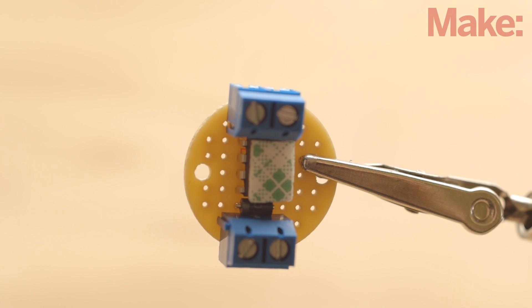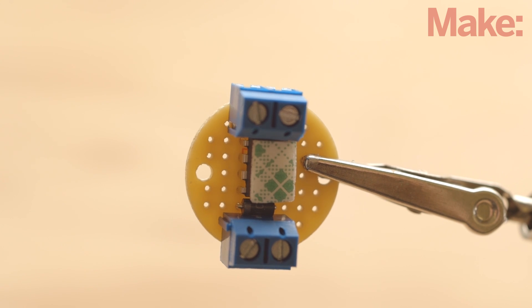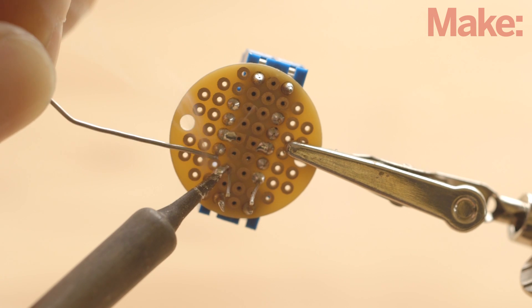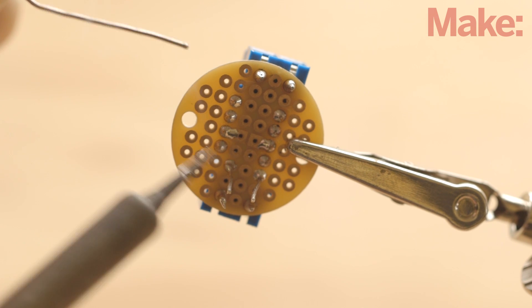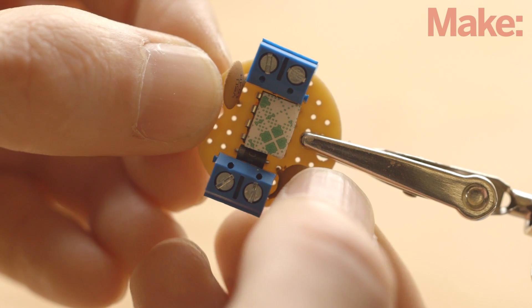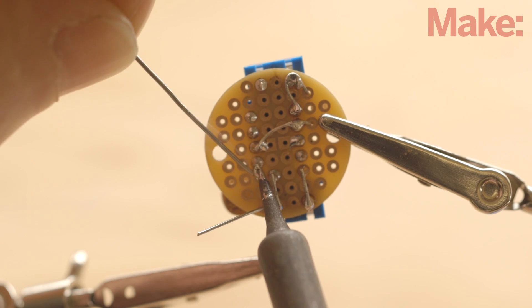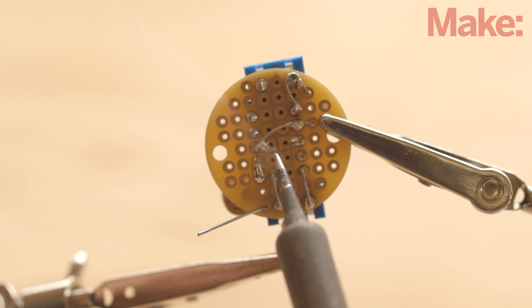Next, we'll add a diode right below the 555 timer, making sure that the silver stripe on the diode body is closest to pin 4. This helps control the counter-electromotive force that occurs when motors are switched off. The next two components are ceramic capacitors. The first is soldered between pin 5 and ground, and the second one is soldered between pins 2 and 6 and ground.